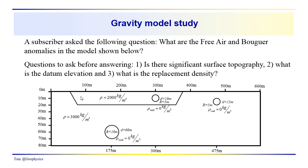We've got a density in this graben-like feature of 2,000 kg per cubic meter, but it's underlain by an interval with a much higher density of 3,000 kg per cubic meter. So what do you choose as your replacement density?